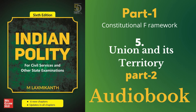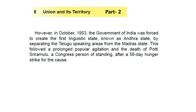Lakshmikant Chapter 5, Art 2 - Union and its Territory. In October 1953, the government of India was forced to create the first linguistic state, known as Andhra State, by separating the Telugu-speaking areas from the Madras state. This followed a prolonged popular agitation and the death of Potti Shriramulu, a Congress person of standing, after a 56-day hunger strike for the cause.